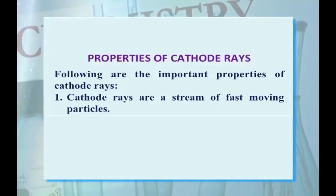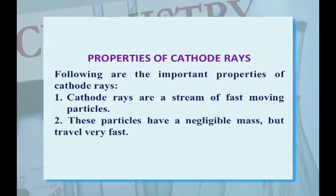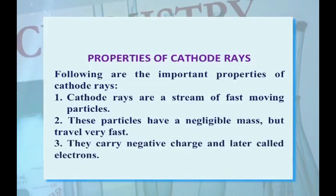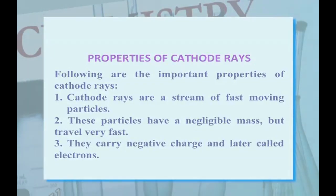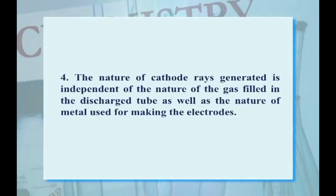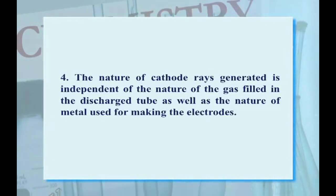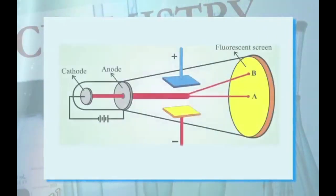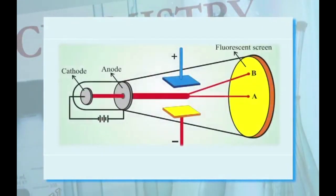This overall arrangement for the cathode ray produces negatively charged particles which are later called electrons. Properties of cathode rays: first, cathode rays are a stream of fast-moving particles. These particles have negligible mass but travel very fast. They carry negative charge and are later called electrons. The nature of cathode rays generated is independent of the nature of the gas filled in the discharge tube as well as the nature of the metal used for making the electrodes.